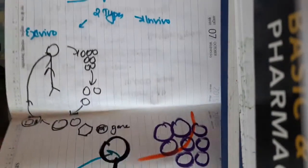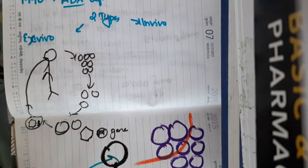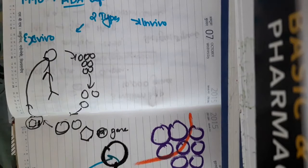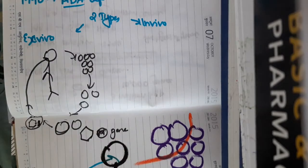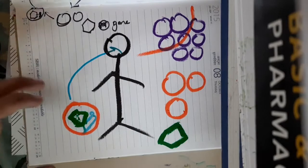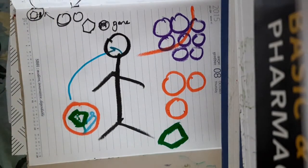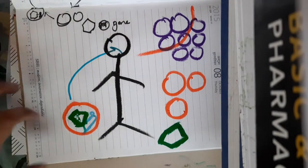In in vivo gene therapy, we use viral or non-viral delivery systems — we modify the viruses and inject them directly to the patient. In ex vivo, we are injecting the modified cells back to the patient, whereas in in vivo, we are injecting the viruses themselves to the patient.